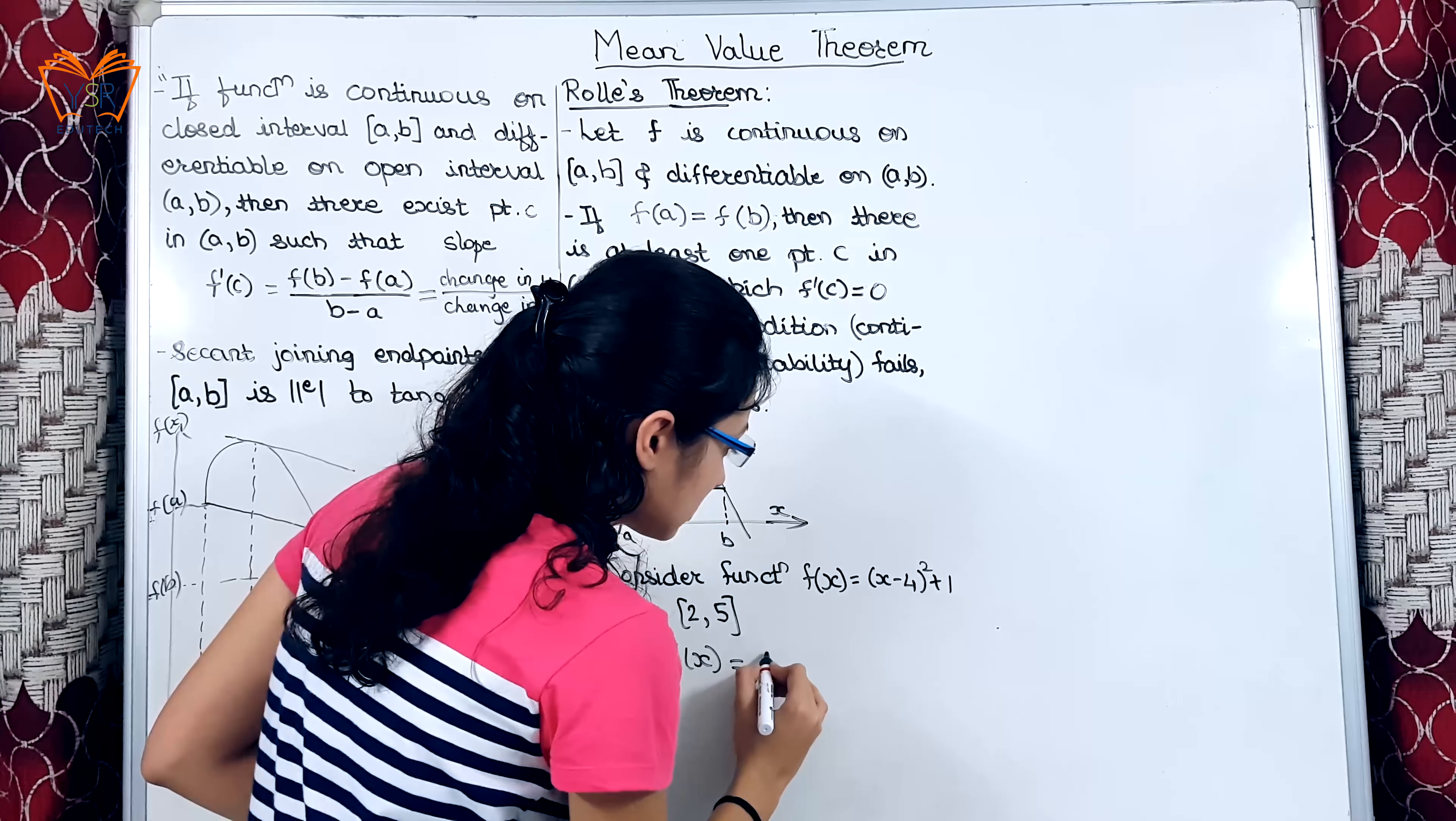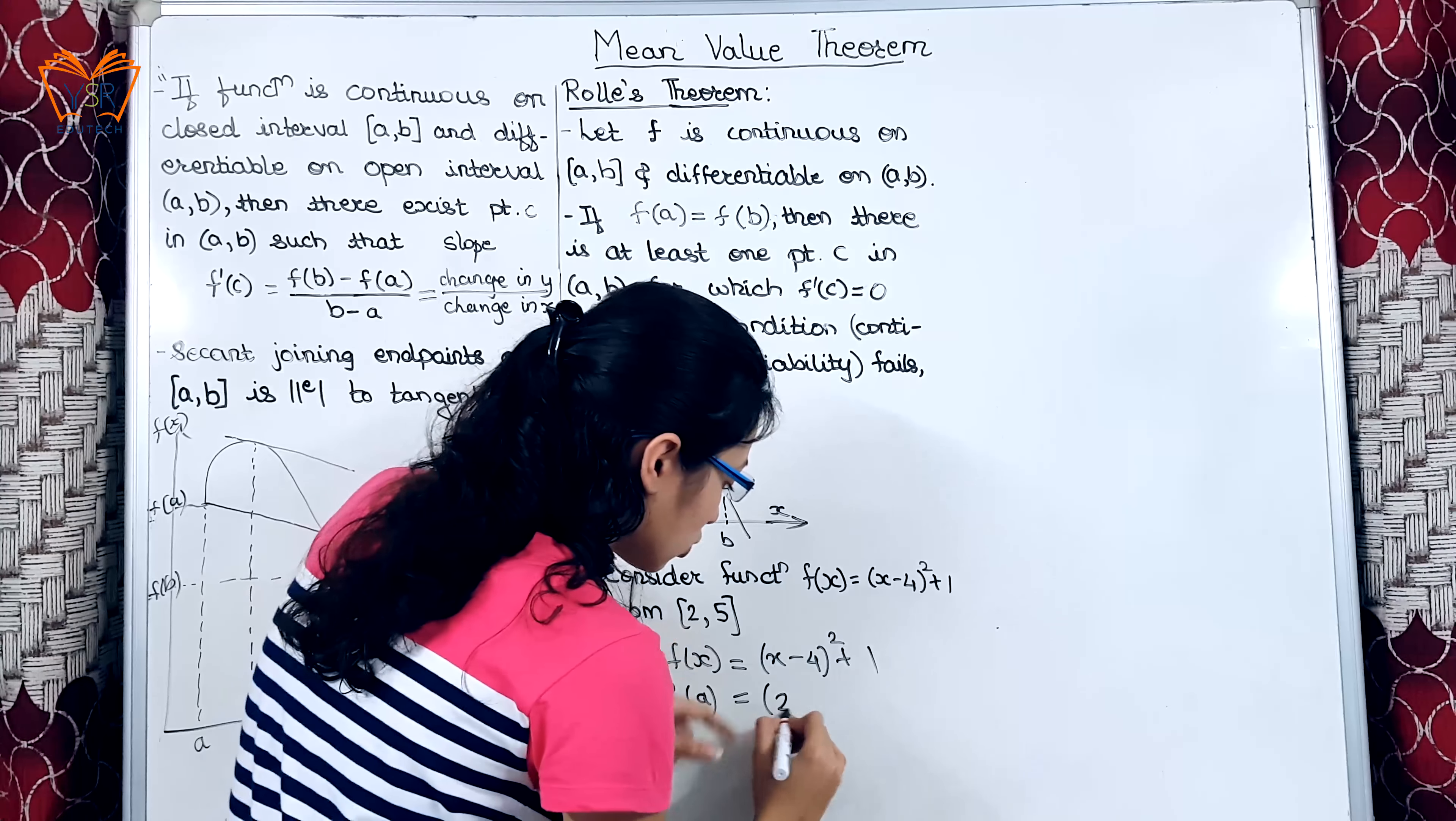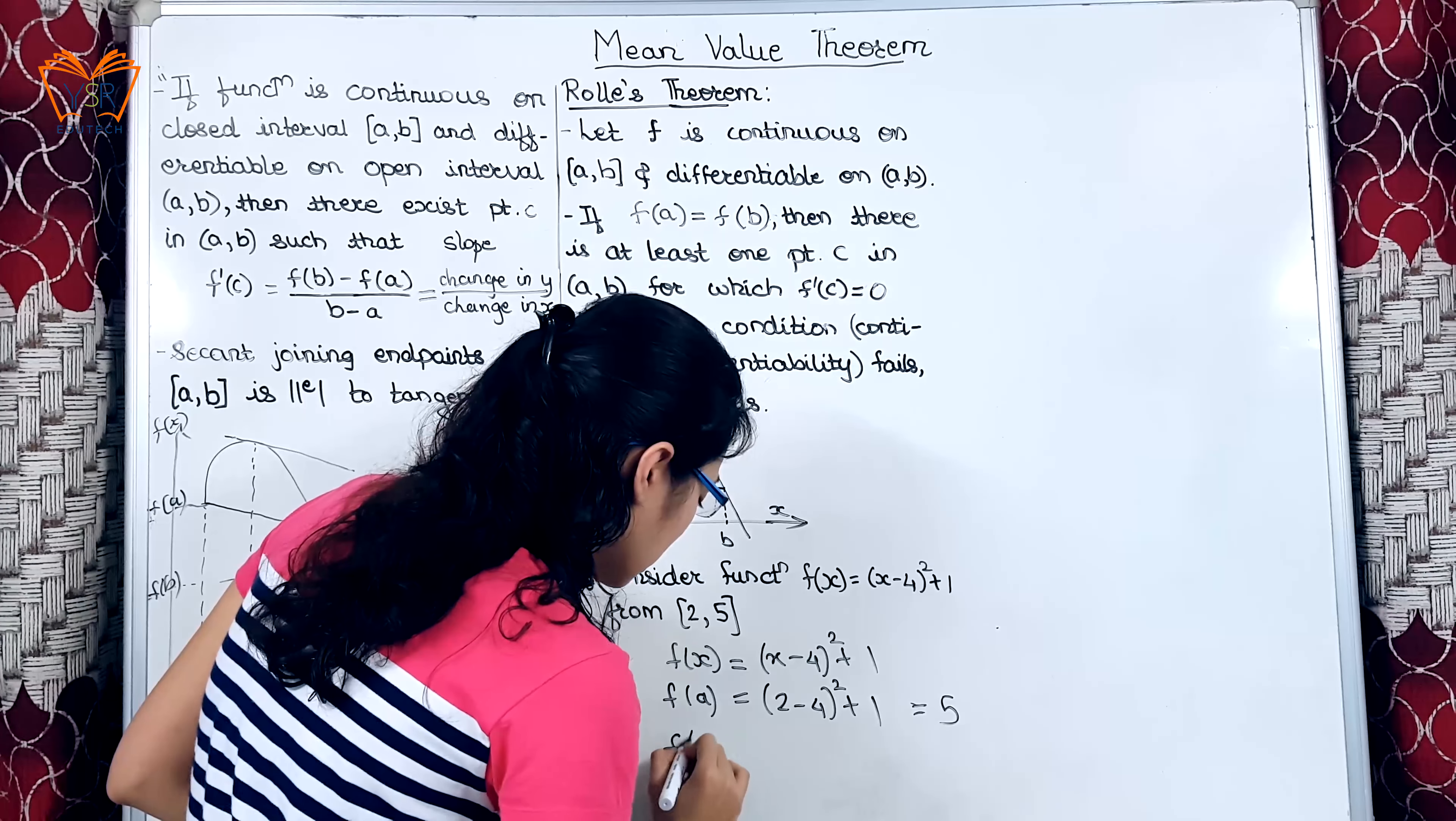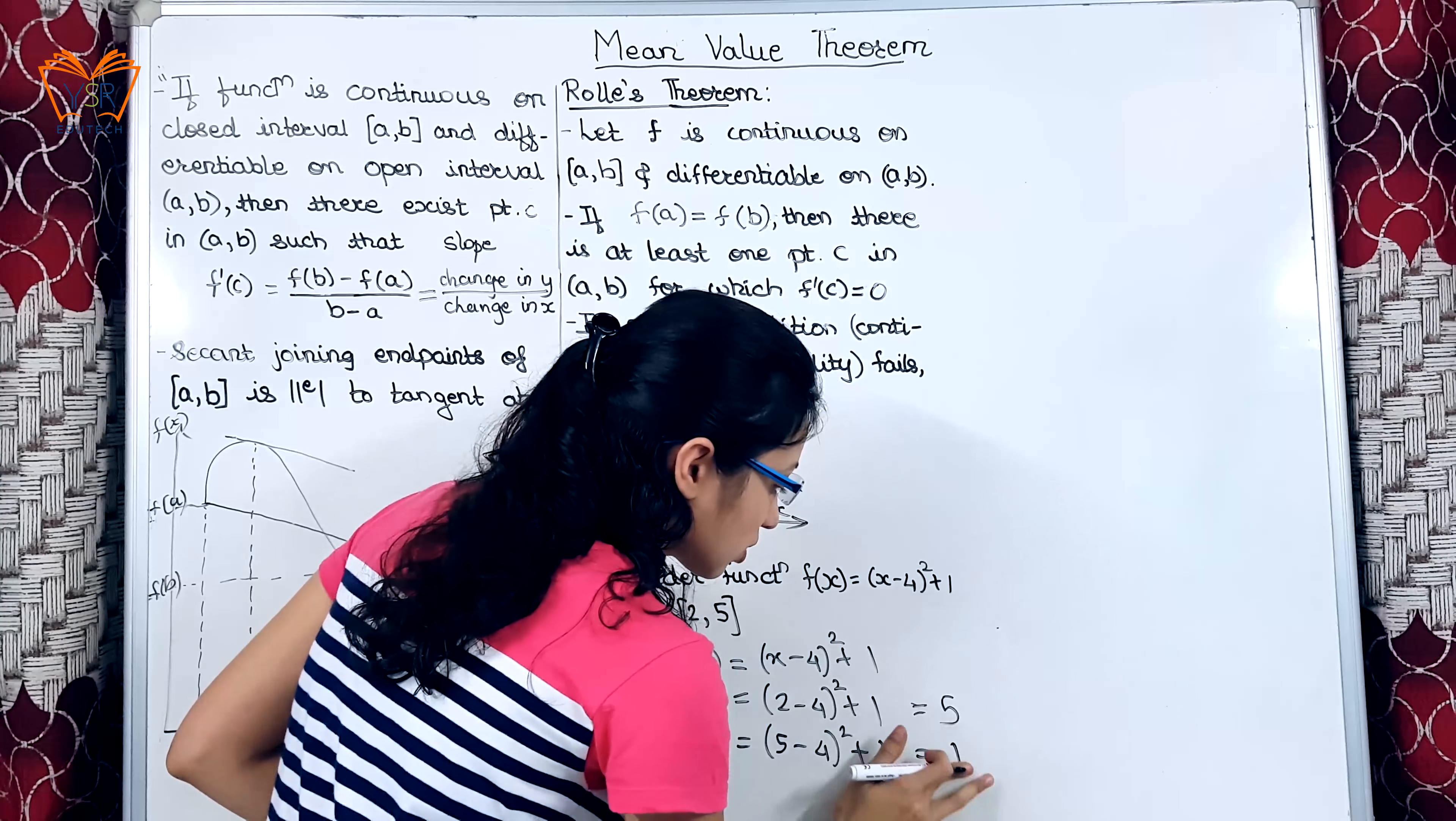Given function is f(x) = (x-4)² + 1. f(a) will be a is 2 here. So, (2-4)² + 1. This gives 5 and f(b) substitute 5 instead of x will get 1² + 1 is 2.